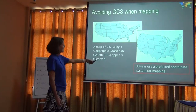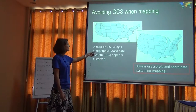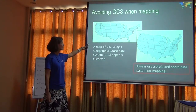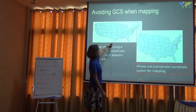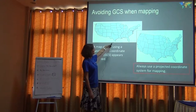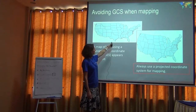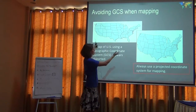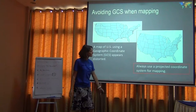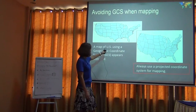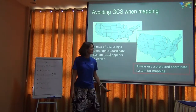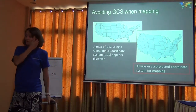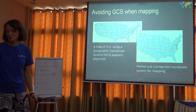Do not make maps in a geographic coordinate system. This is the United States in a GCS and you can see it's distorted — if you know anything about the shape of the US, it's absolutely distorted. And this is it projected; this one's an equal area projection.